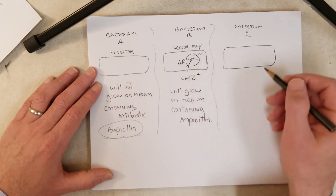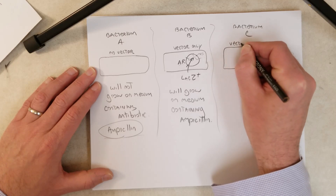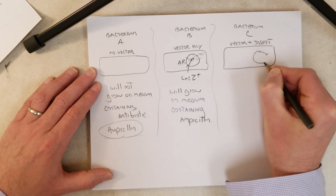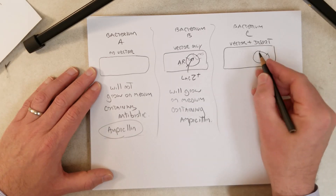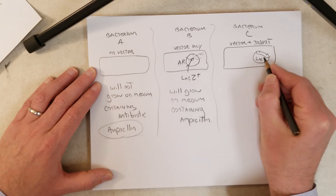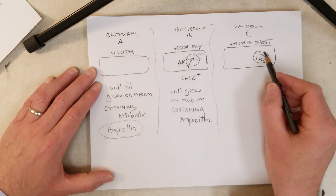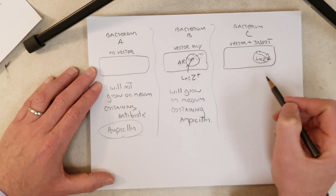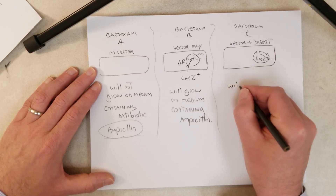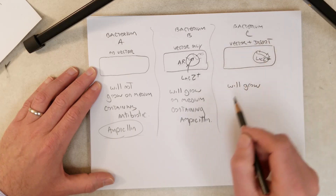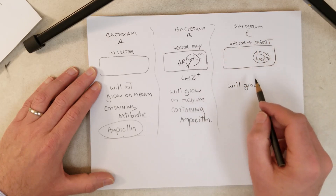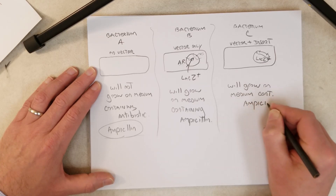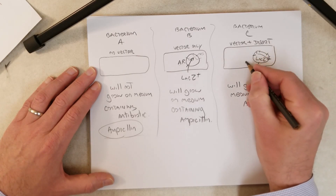Bacterium C has the vector and the insert. The insert is in the multiple cloning site, so the lacZ gene is lacZ minus — the presence of the insert in the multiple cloning site disrupts lacZ, so it no longer encodes a functional protein. Bacterium C will also grow on medium containing ampicillin, just like bacterium B, because it still has the antibiotic resistance gene.